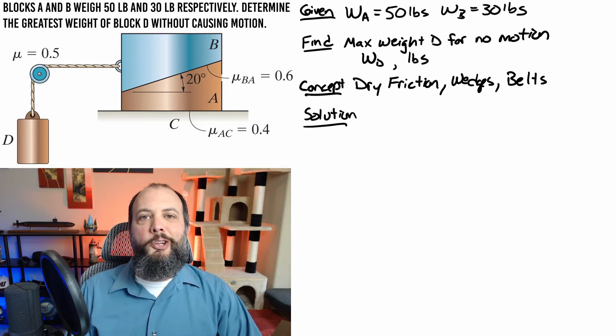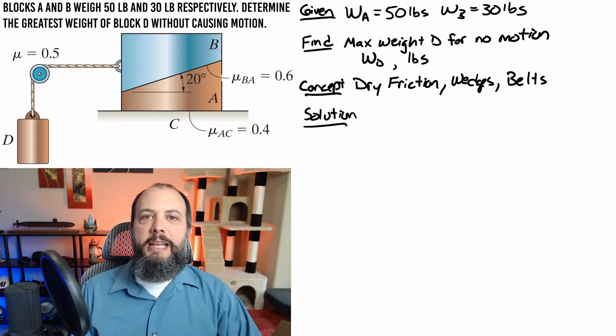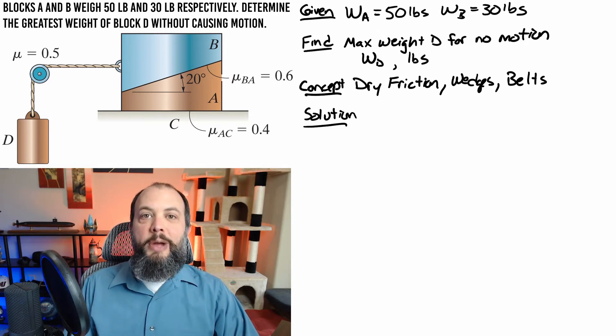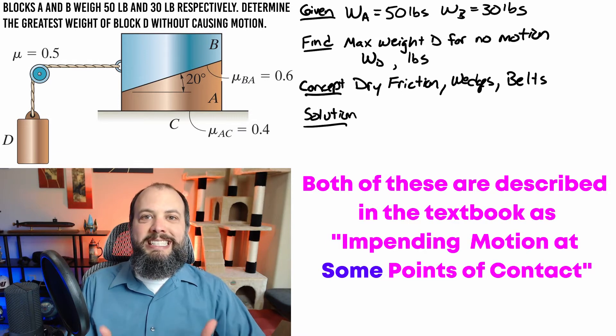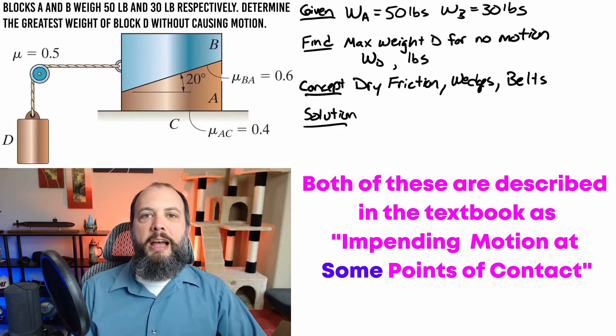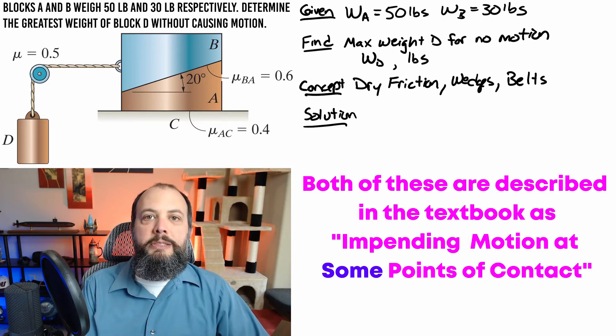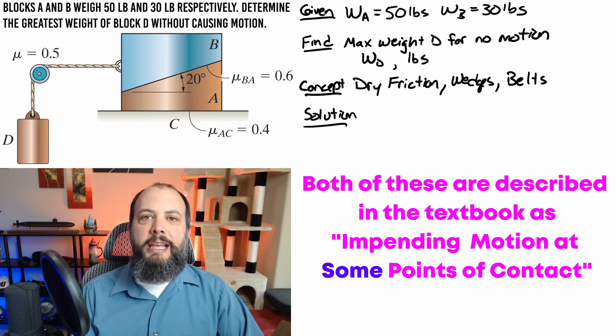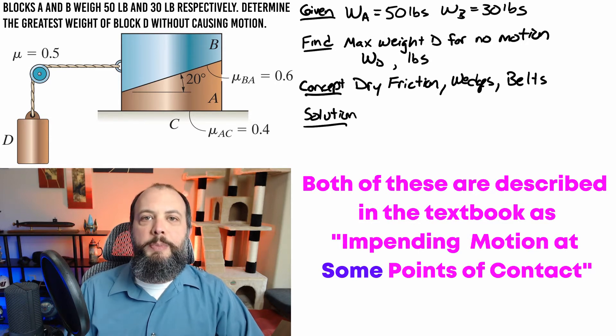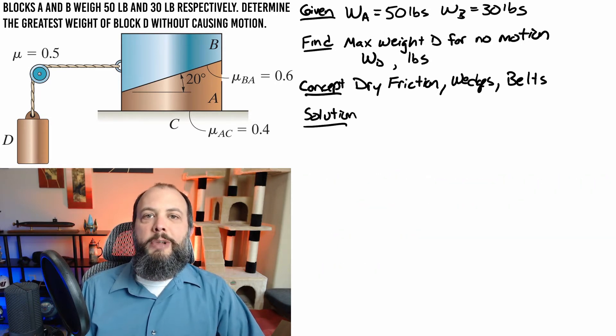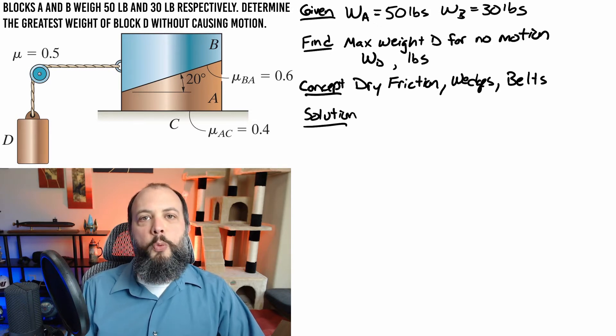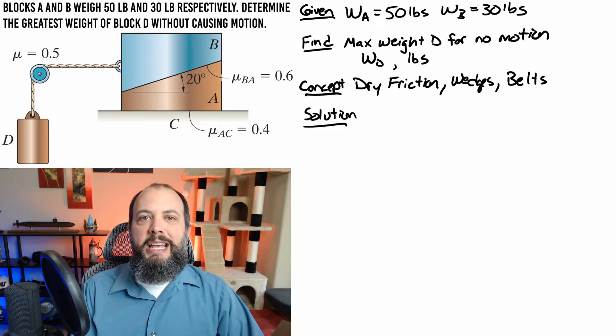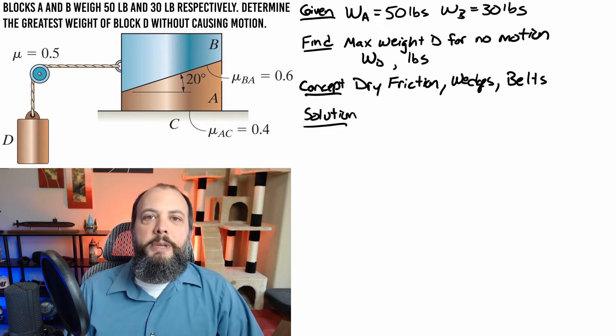Now looking at this problem in particular before I draw my free body diagrams I need to actually analyze what type of motion will happen. The first type of motion is that the two blocks could stay stuck together and block A would slide along the ground. And the second type of motion would be block B sliding down off of block A. So block A would stay stationary and only B would be moving. Since it's not clear which will actually happen first we'll have to solve this problem twice, and whichever of those two motions happens at a lower tension force will be the final answer.